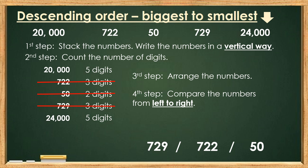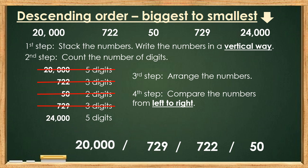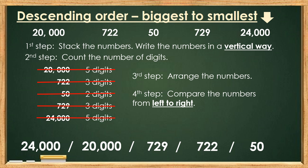We also have 2 numbers with 5 digits, so let's start again to compare the numbers from left to right. 2 and 2 are the same. 0 and 4 are not the same — number 4 is bigger and number 0 is smaller. So we have to write 20,000 first and the biggest number is 24,000. Now we have arranged the numbers in descending order, or from biggest to smallest.